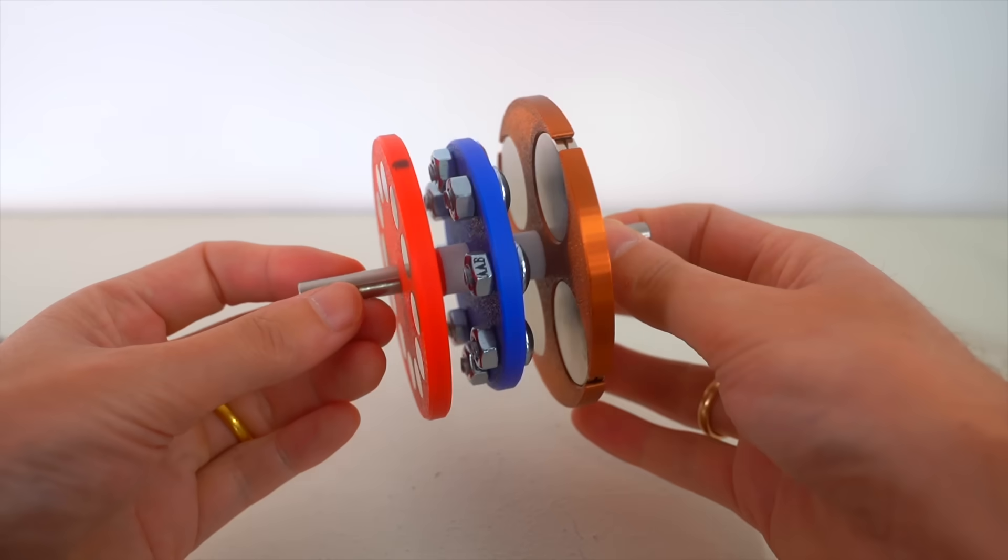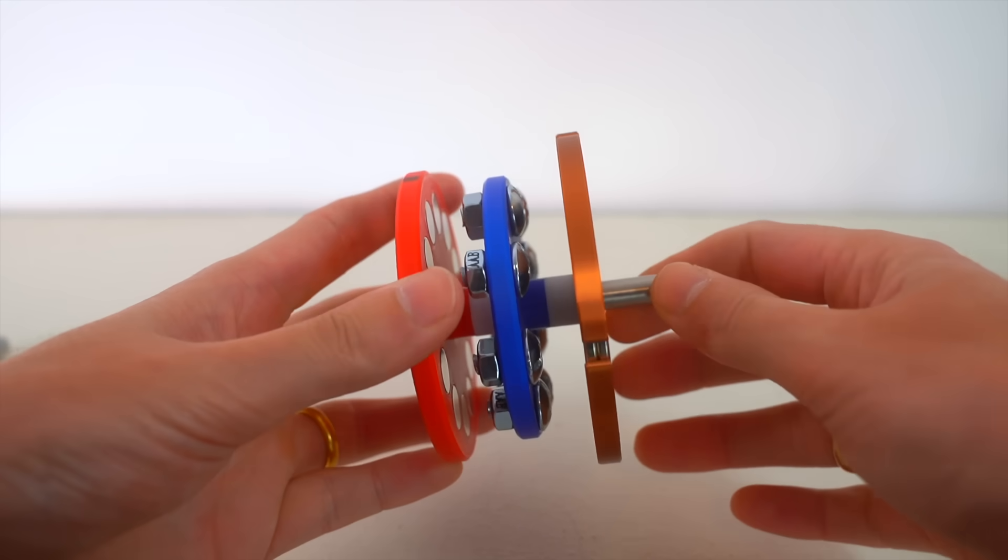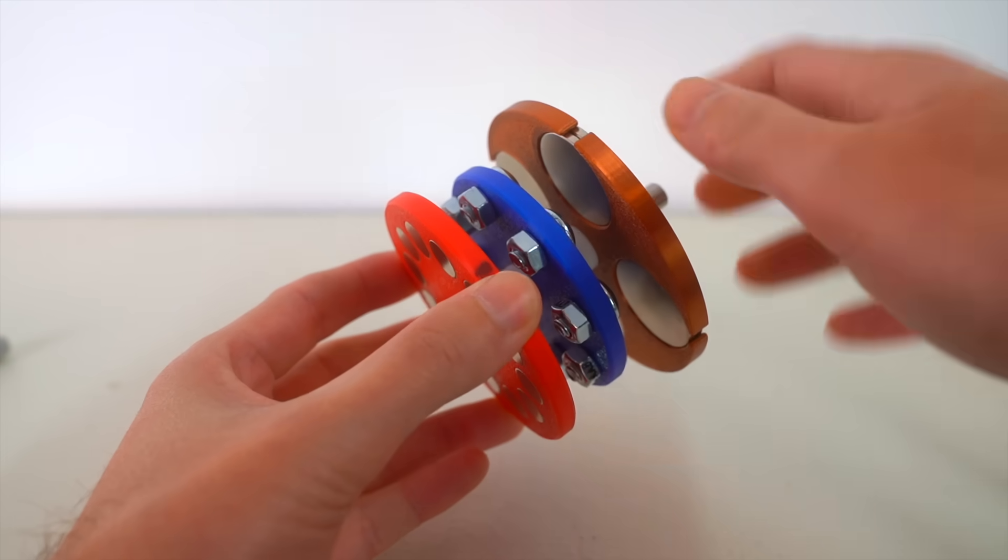And that's that planetary gear sets basically have six gear ratios in one. It all depends on which gear I lock or hold in place.